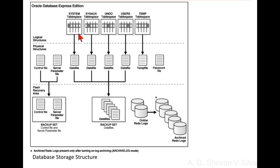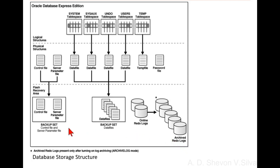System tablespace, undo tablespace, and users tablespace are connected to data files. Temp tablespace is connected to temp file. In the flash recovery area, you can see a backup set containing the control file and server parameter file, and a backup set containing data files, online redo logs, and archived redo logs. Control file and server parameter files are connected to the backup set, data files are connected to the backup set with data files, and online redo logs are connected to archived redo logs.